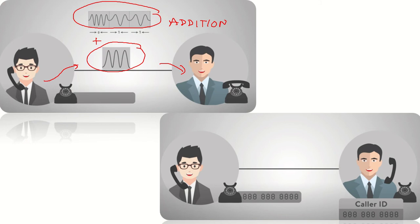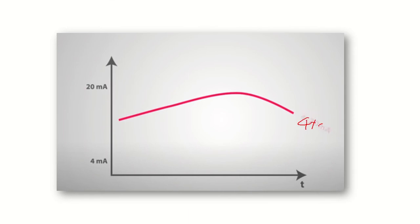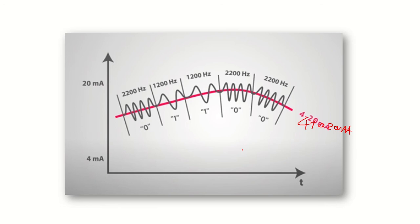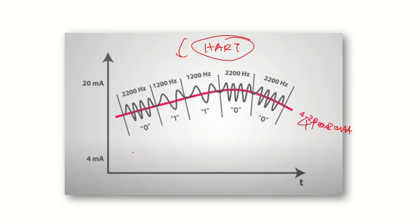The same scenario takes place in industry. We have the conventional 4 to 20 milliampere current loop, and if you add the Bell 202 modem standard to it, this signal is called the HART signal. HART is your analog 4 to 20 milliampere signal with a digital signal added on top. This digital signal carries information such as device parameters, operating conditions, and several other parameters. This way it increases productivity in industries — more information is sent via the same pair of wires.